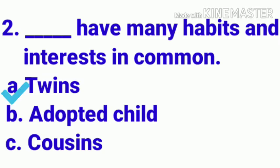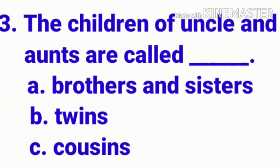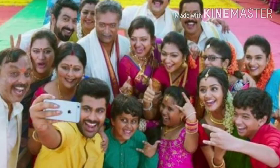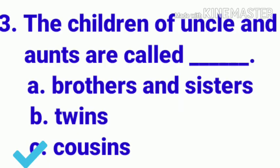Let's move to our third point: the children of uncle and aunts are called blank. The options given here are brothers and sisters, twins, and cousins. You know it very well that children of our uncle and aunts are called cousins, so we will choose cousins as our answer.